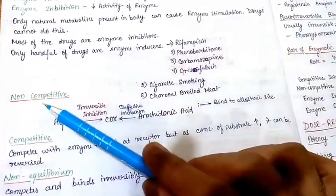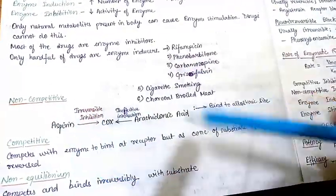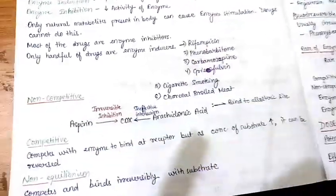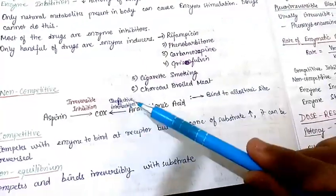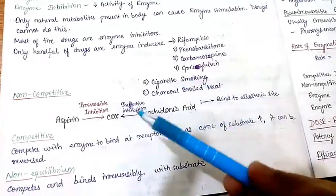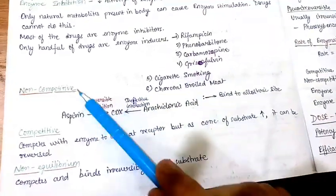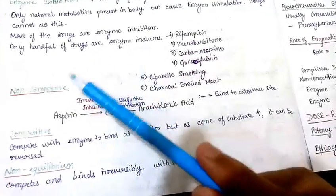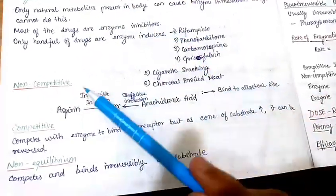Now coming to non-competitive type of inhibition. One example is aspirin: aspirin inhibits cyclooxygenase, which is responsible for formation of prostaglandins — that is a type of non-competitive inhibition. In non-competitive inhibition, the inhibitor binds to sites other than the active site, which are also known as allosteric sites.